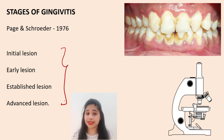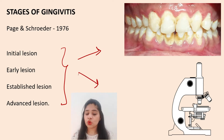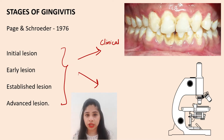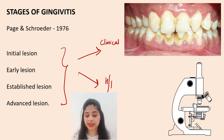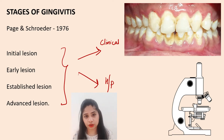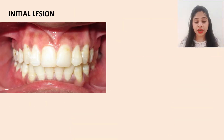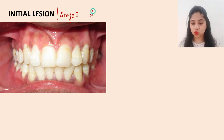When discussing these lesions, we will cover two aspects: the clinical aspects that can be observed and visualized, and the histopathological aspects, in which we take a small cross-section of the gingiva and observe it under the microscope. First, let's talk about the initial lesion, which is Stage 1, occurring between two to four days of plaque accumulation.